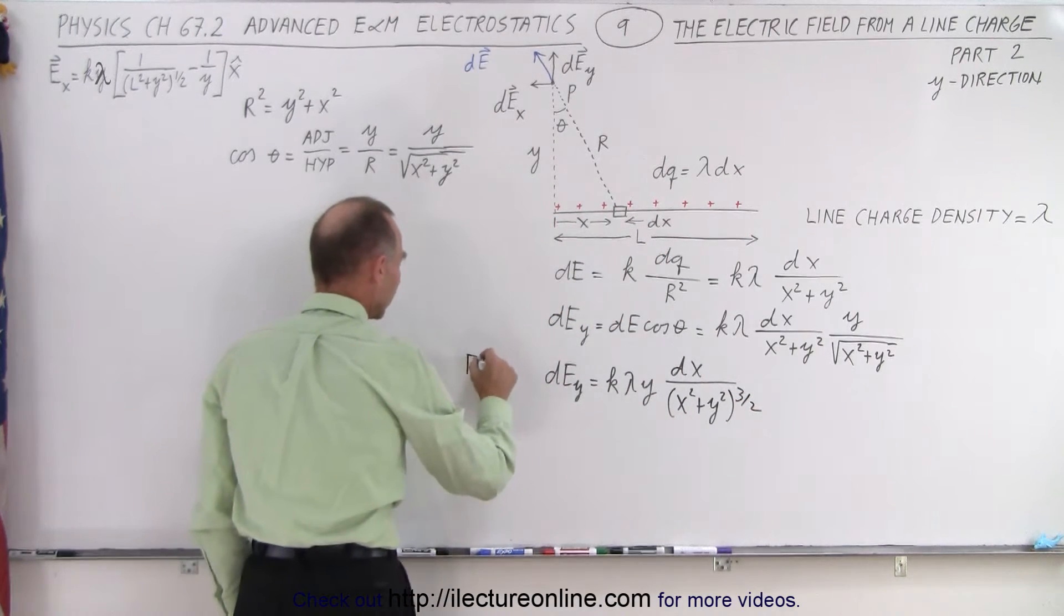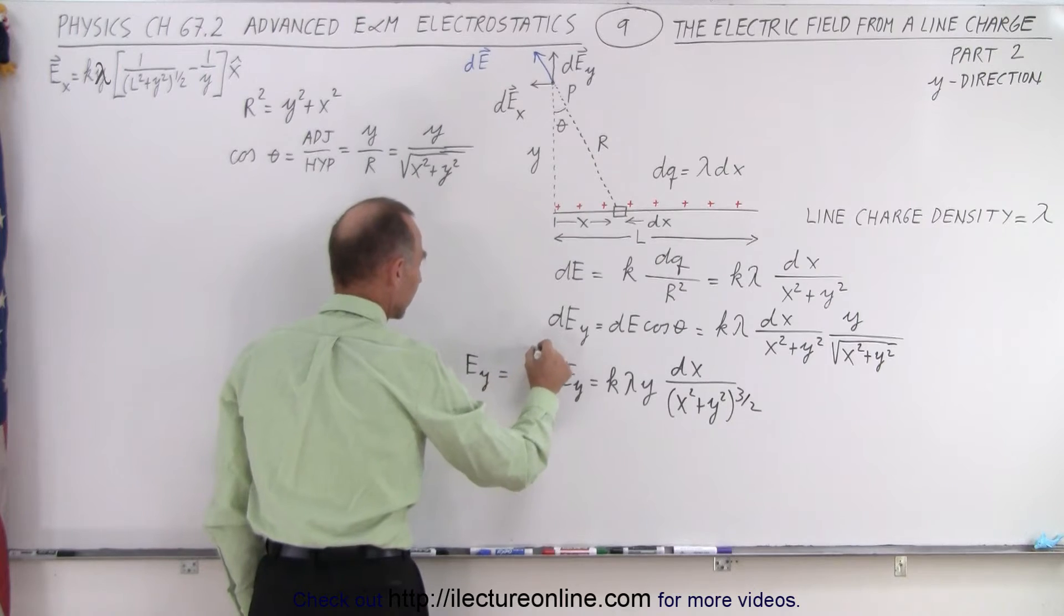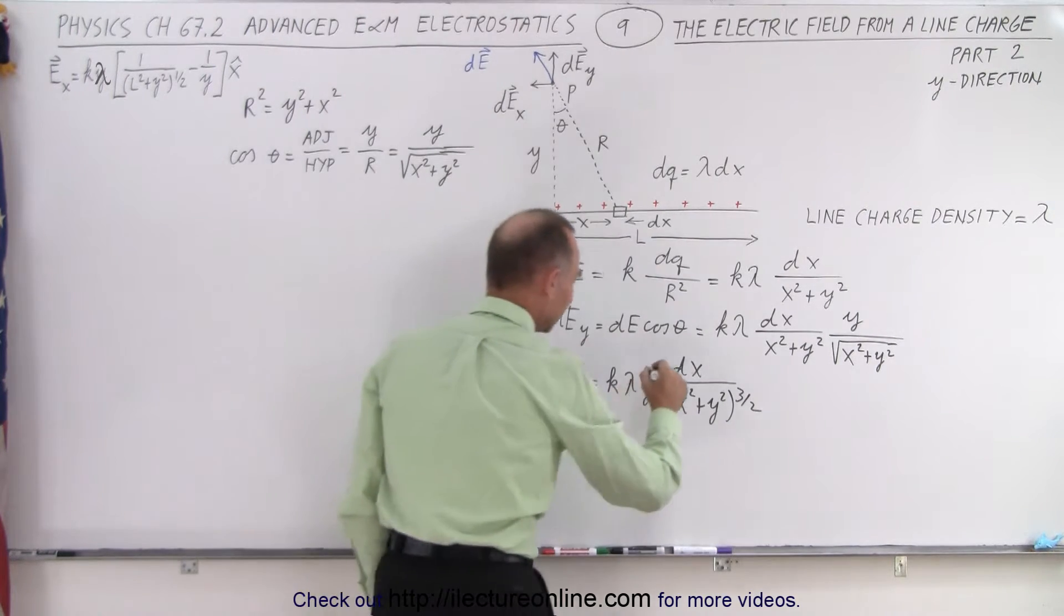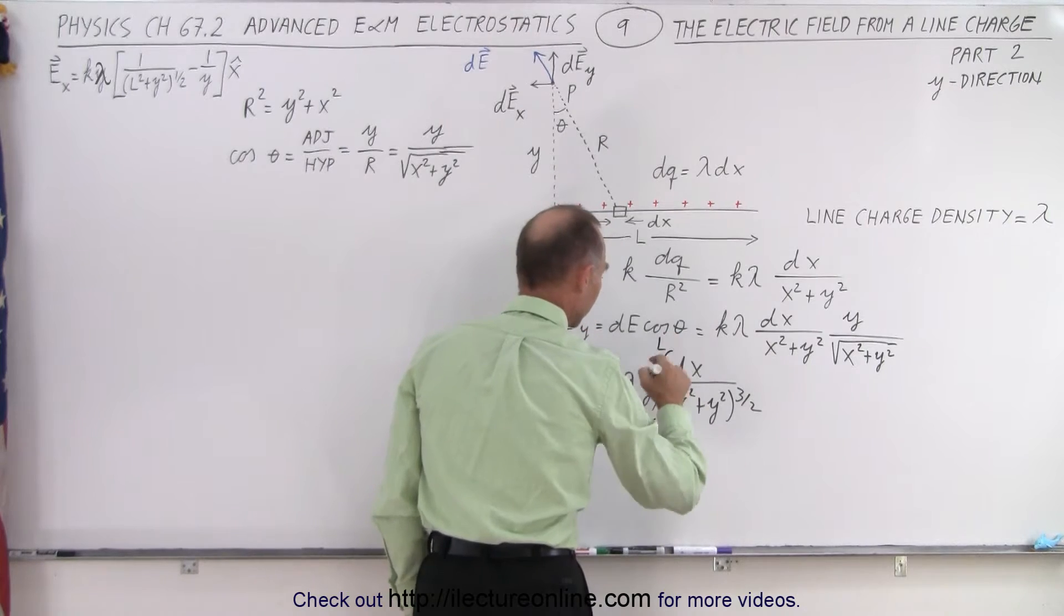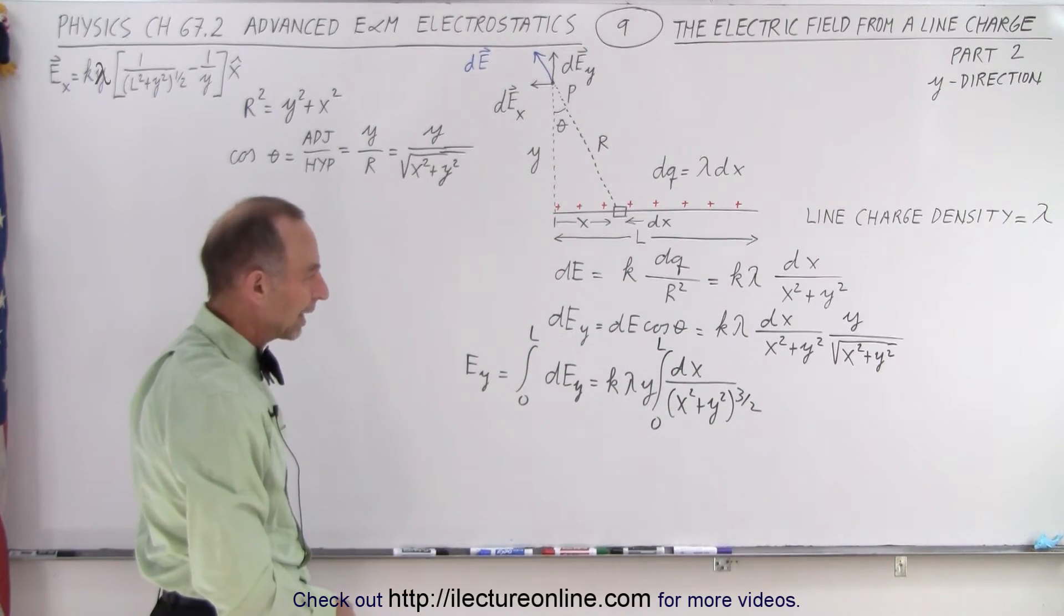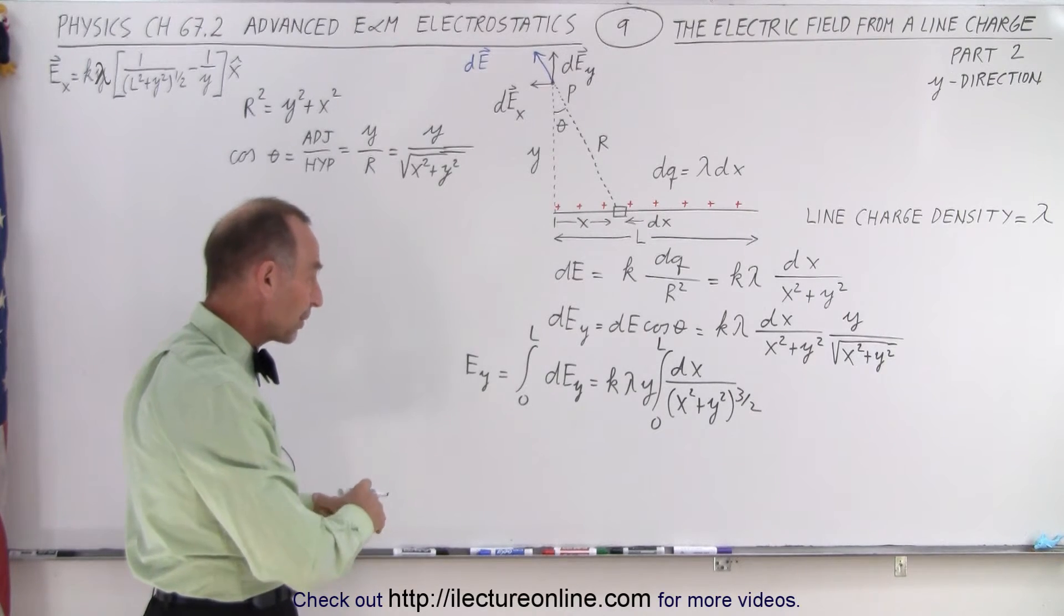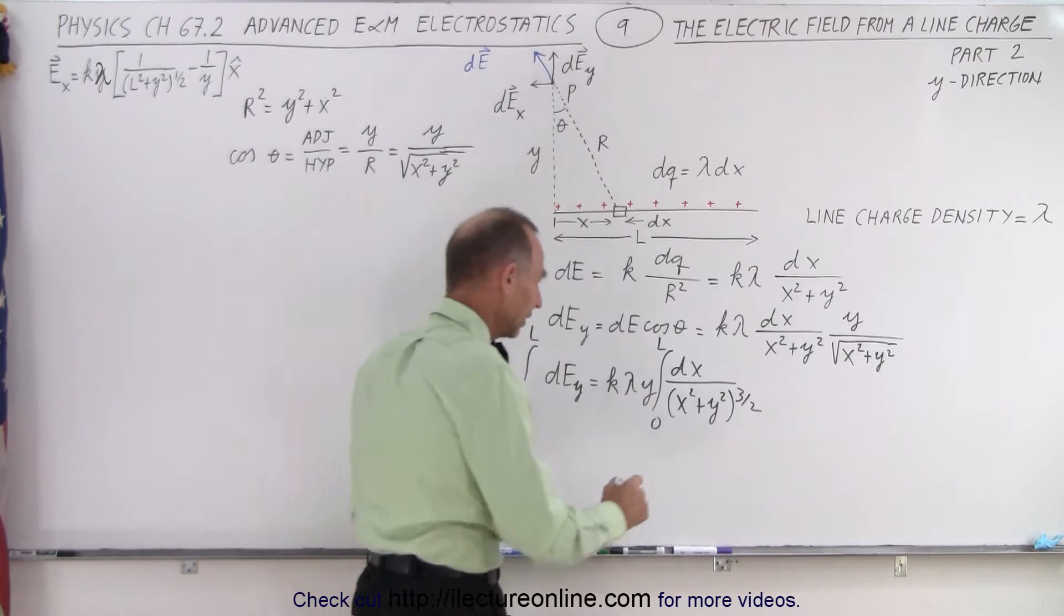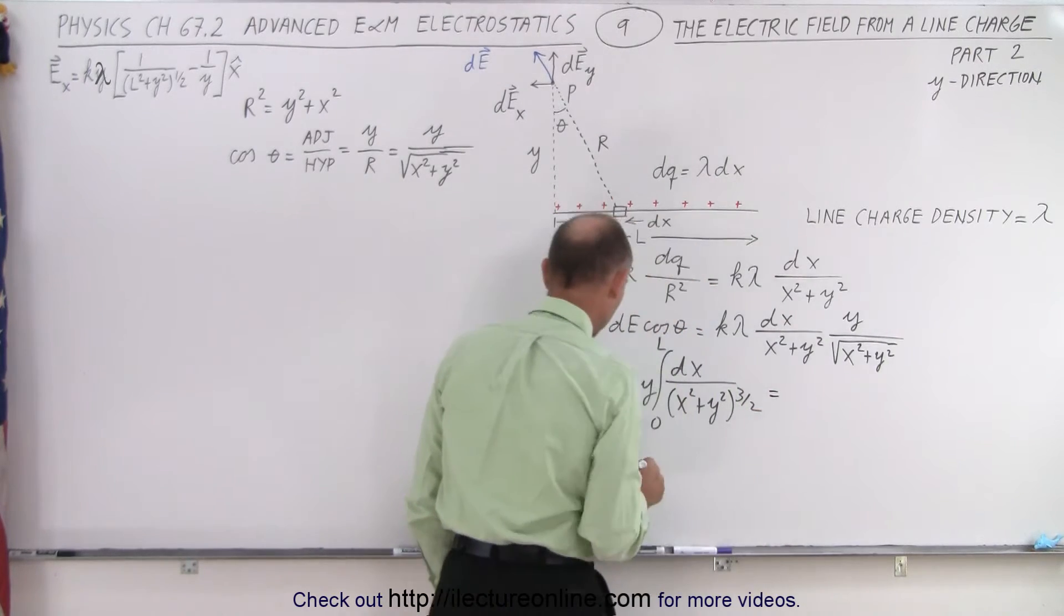And if we want to find E in the y direction, that is equal to the integral from 0 to L of the dE_y's when we add them all up, which is equal to the integral from 0 to L of this integrand. Now that type of integral is going to appear a lot in advanced E&M. And you'll find out that the integral of that can be written as follows.